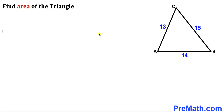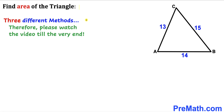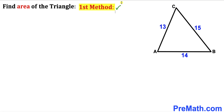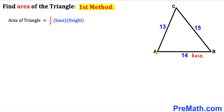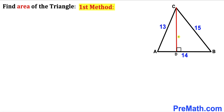In this video I'm going to share three different approaches, so please watch till the very end. Here's our first method. Let's recall the area of a triangle formula: area equals one half times the base times the height. In our case the base of triangle ABC is 14, however the height is missing. So I have dropped perpendicular CD onto base AB, making CD the height of this triangle. Let me label this height as lowercase h.